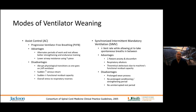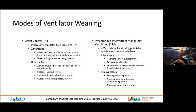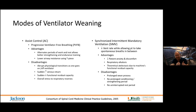The advantages of assist control include allowing alternate periods of work and rest, and therefore better strengthening and endurance training. This allows us to use a T-piece, switching patients onto it and allowing them to breathe on their own. Remember that while on mechanical ventilation, the diaphragm is not contracting at all, and it will atrophy even more quickly than a limb put in a cast — there is a very rapid atrophy of the diaphragm with mechanical ventilation.